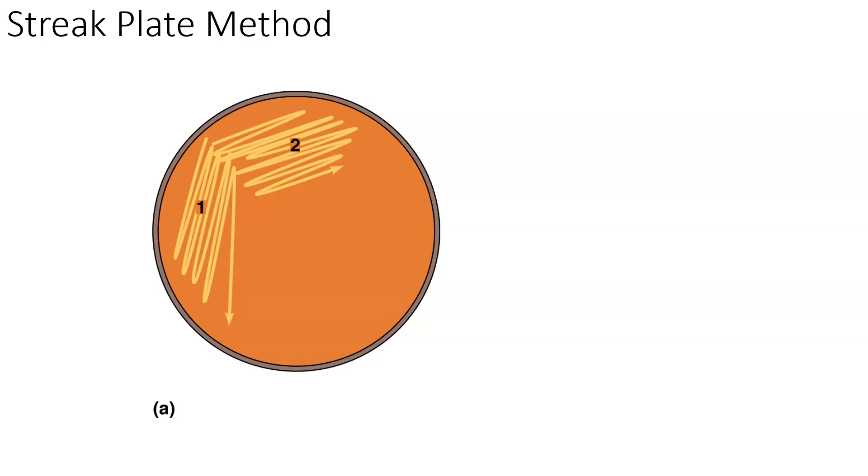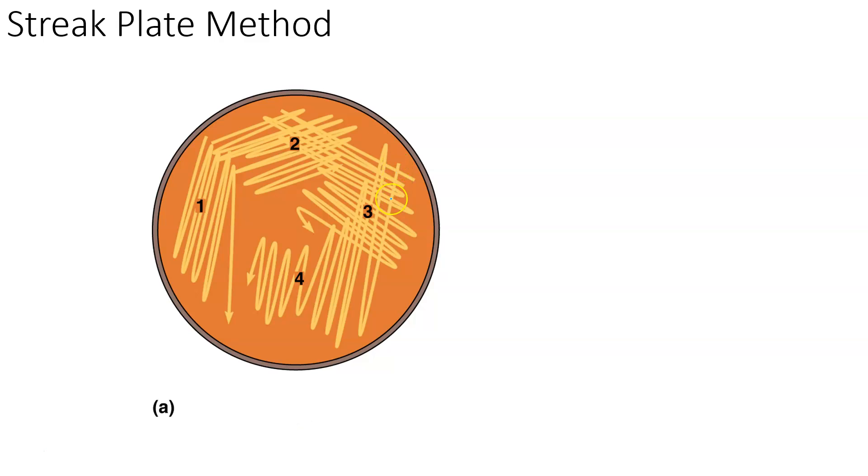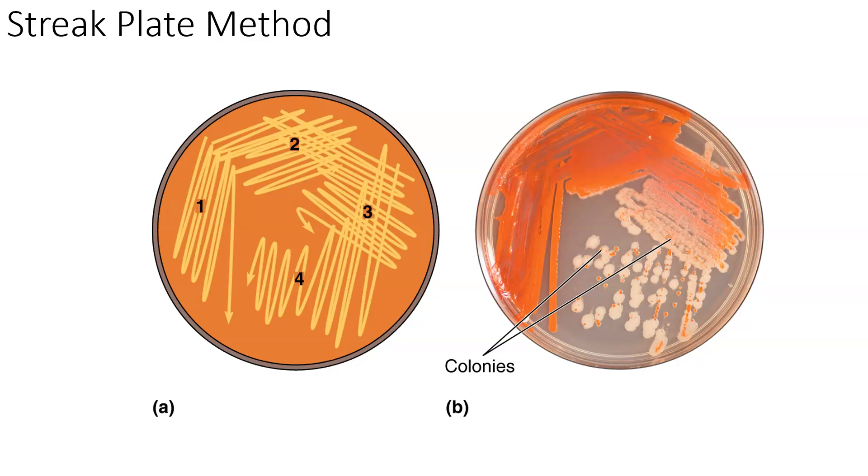You'll then flame your loop, sterilize your loop, you will follow that up by pulling through quadrant two and inoculating quadrant three. That should further deconcentrate this particular solution or sample. You flame your loop and then you pull through quadrant three and inoculate quadrant four. By the time you get done with all four quadrants, after it is allowed to grow for 24 to 48 hours, you should have a sample that allows you to actually see pure cultures.